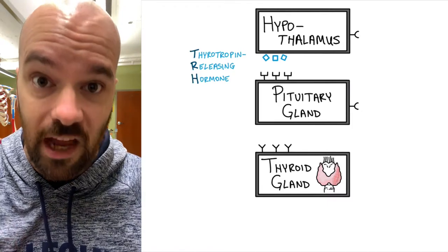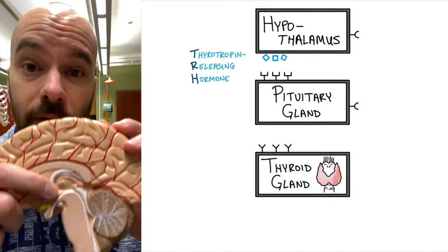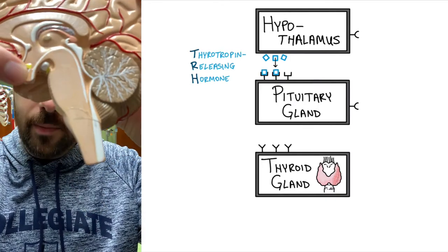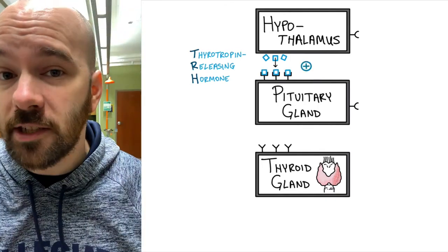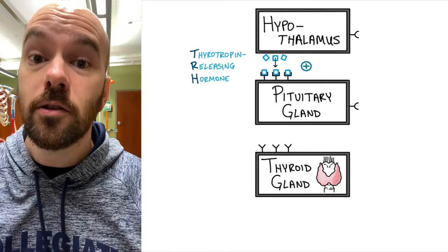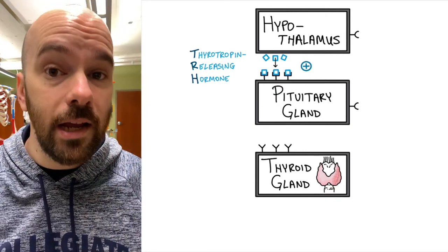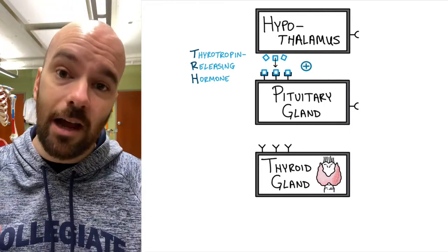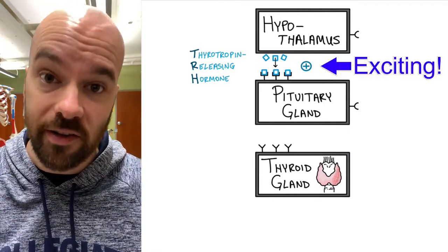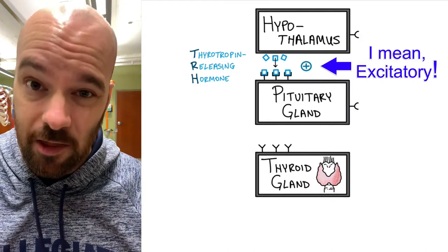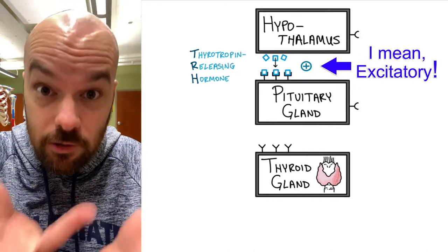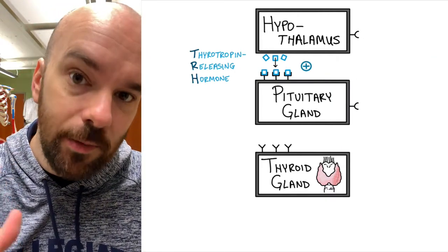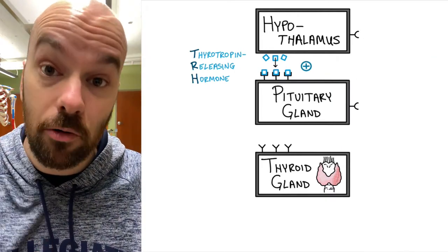The hypothalamus releases thyrotropin releasing hormone, or TRH. That hormone moves from the hypothalamus down to the pituitary gland and it's excitatory, meaning it tells the pituitary gland to release its own hormone. TRH has a stimulatory effect on the pituitary gland — in the diagram that's represented with a circle and a plus sign. TRH is basically telling the pituitary to go ahead and release its hormone. The TRH will bind to receptors and stimulate the pituitary gland.